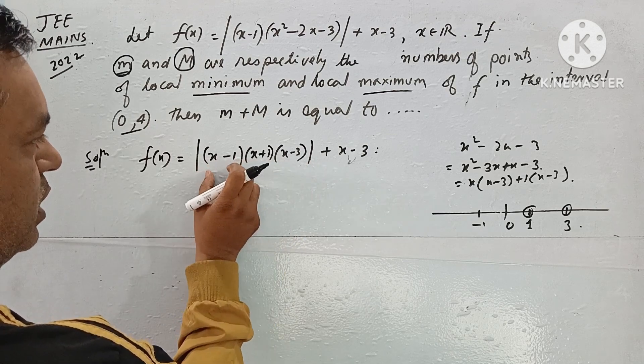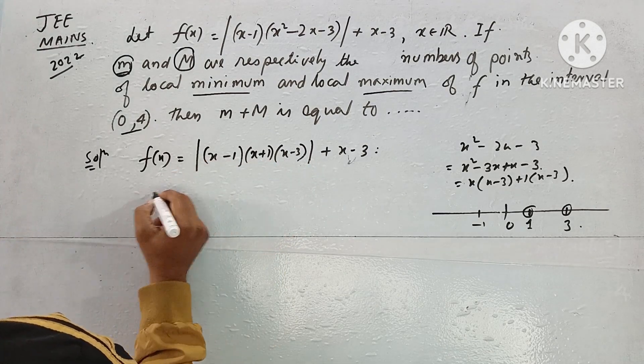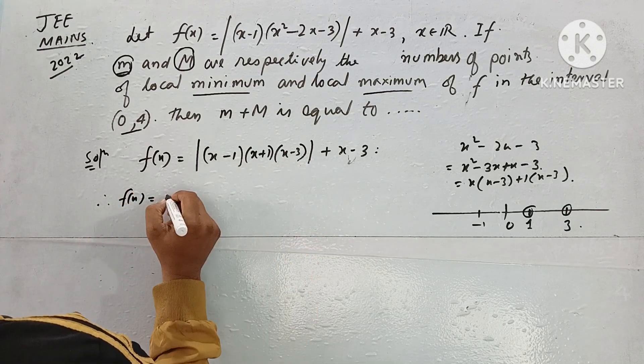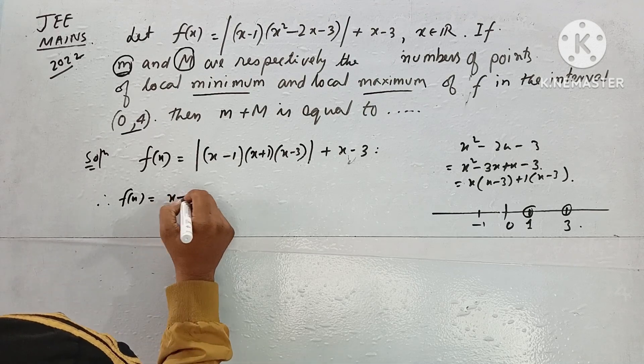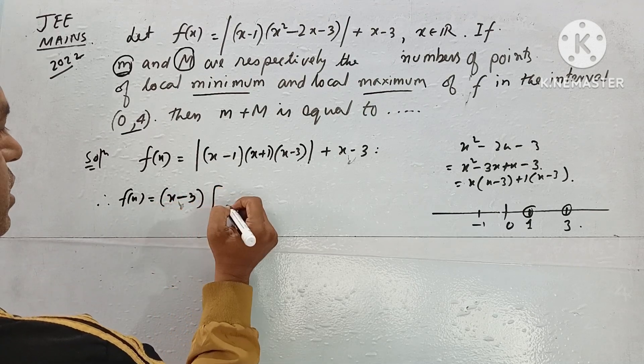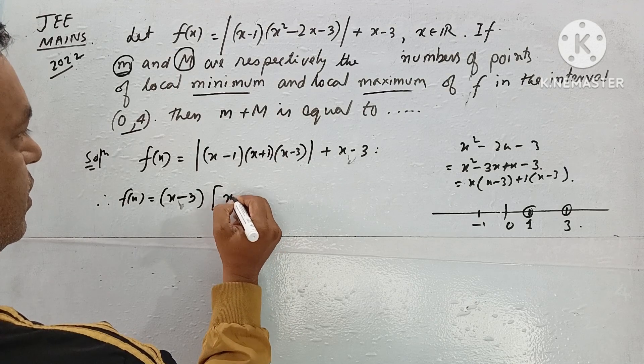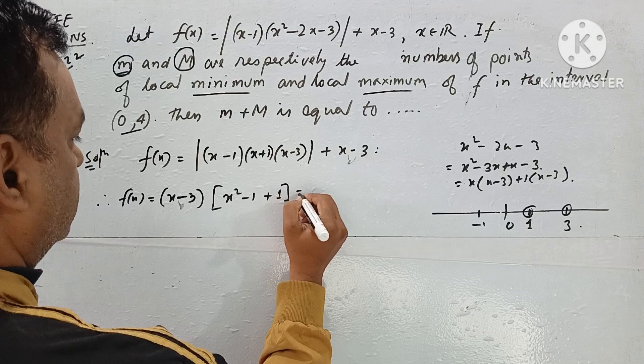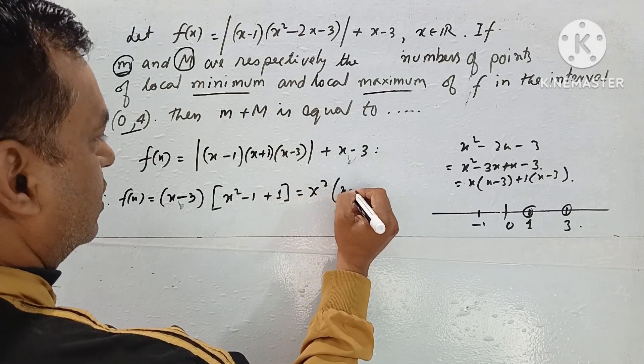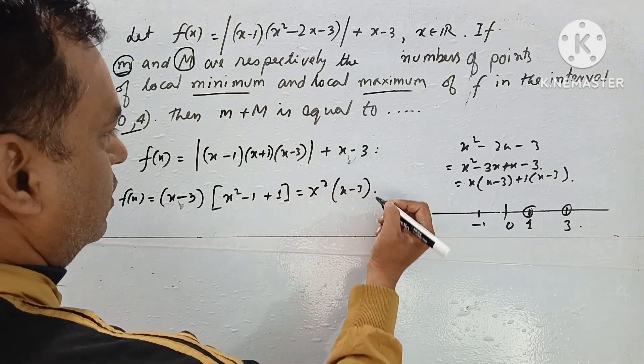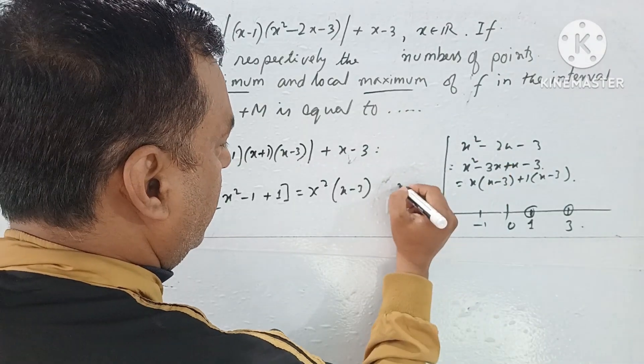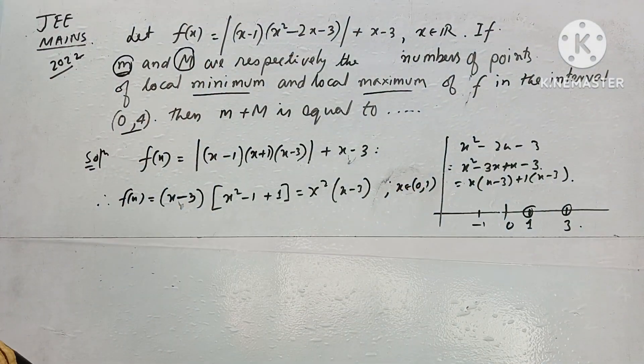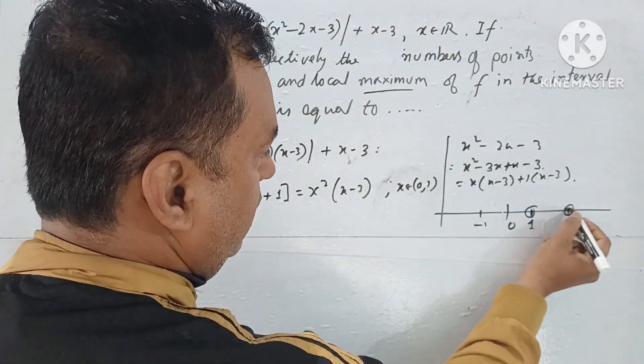Therefore modulus of x, so f(x) equals x(x²-1) + x - 3, which simplifies to x² + x - 3, when x belongs to (0,1).